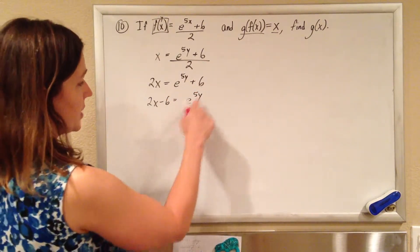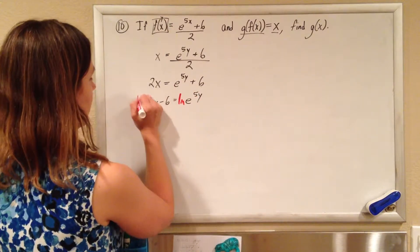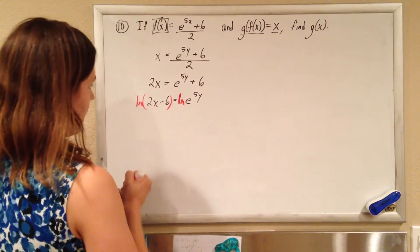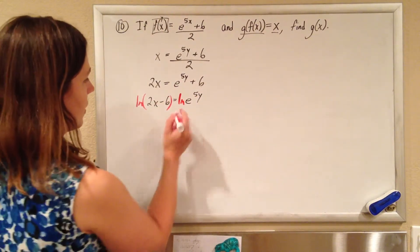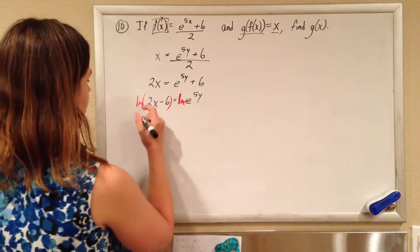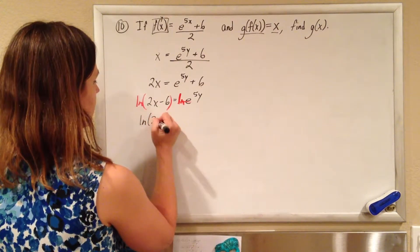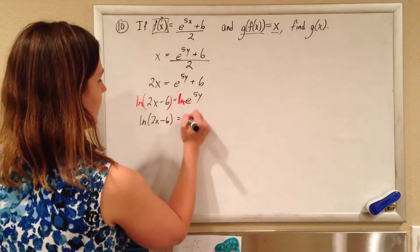Undo the exponent by taking the log of both sides, and so these will cancel each other out. And you'll just get the ln of 2x minus 6 equals 5y.